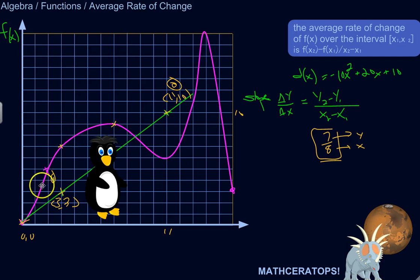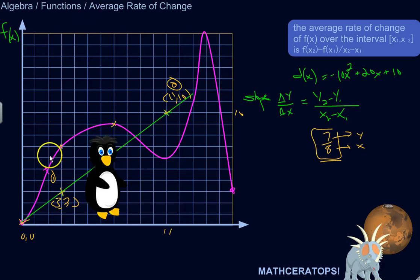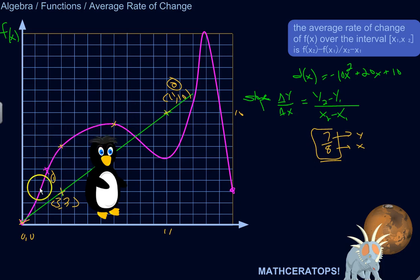But for now, you can calculate the average rate of change of a function. The average rate of change is calculated just like the slope of a straight line. You pick two points and find the slope of the secant line — that's what it's called — the secant line that goes through those two points. And that's the average rate of change over that interval.